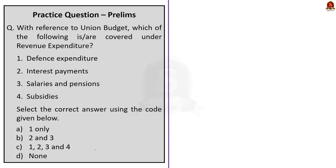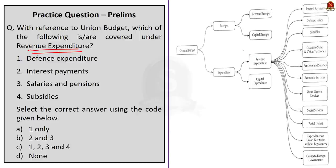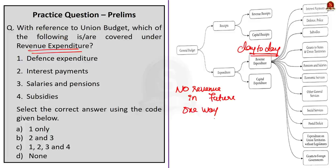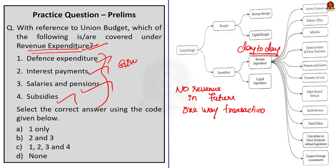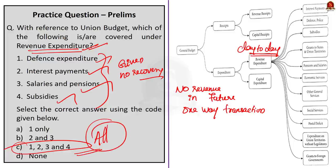The last question asks which of the following — defense expenditure, interest payments, salaries and pensions, subsidies — fall under revenue expenditure. Revenue expenditure is incurred to meet day-to-day regular needs of the government and will not yield any revenue in the future; it is a one-way transaction. All four options — defense expenditure, interest payments, salaries and pensions, and subsidies — are given by the government with no recovery. So the answer is option C: 1, 2, 3, and 4 all come under revenue expenditure. An image showing other examples of revenue expenditure is also displayed for reference.